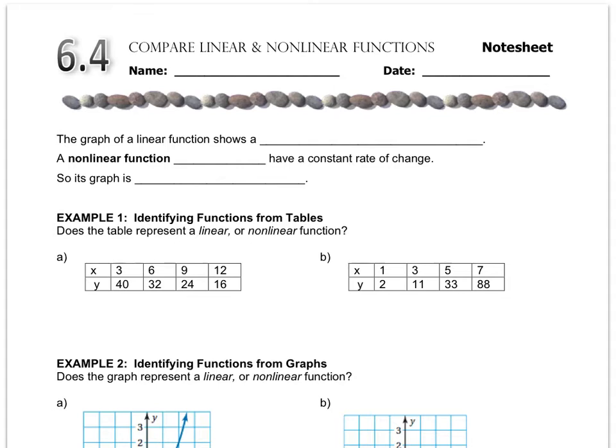The graph of a linear function shows a constant rate of change. And remember, the rate of change is something that we call the slope. A nonlinear function does not have a constant rate of change. So its graph is not a line.